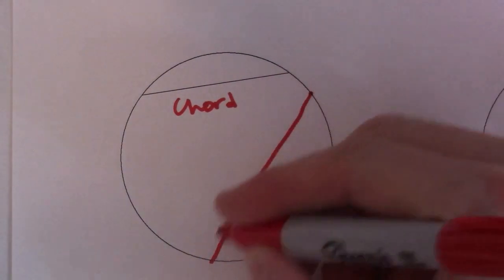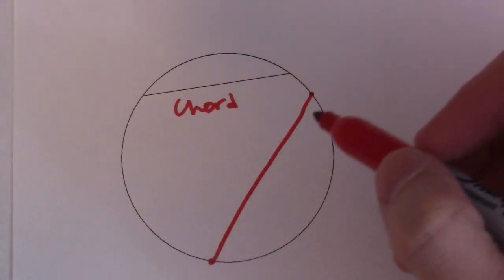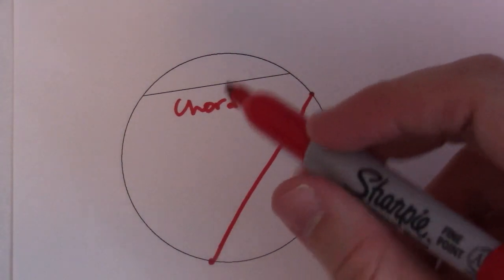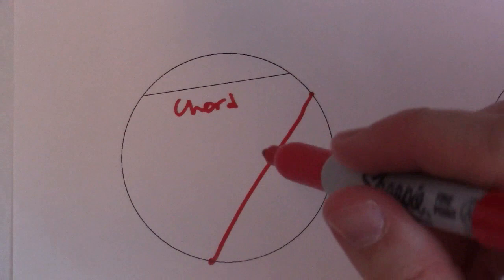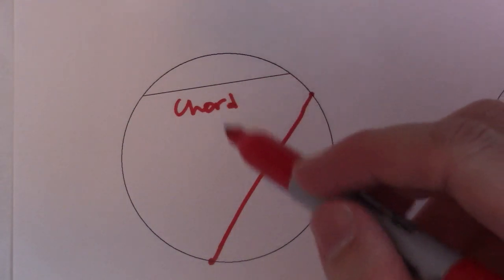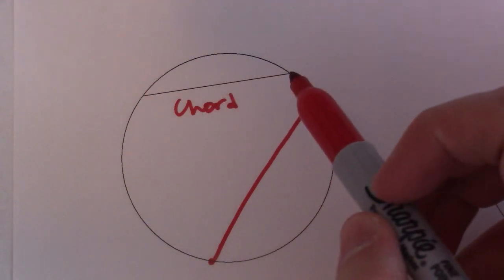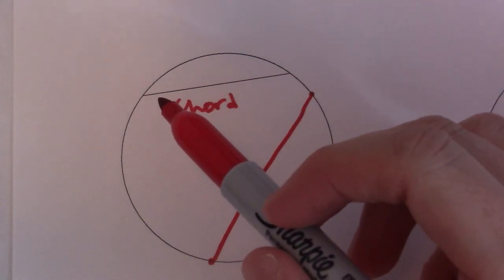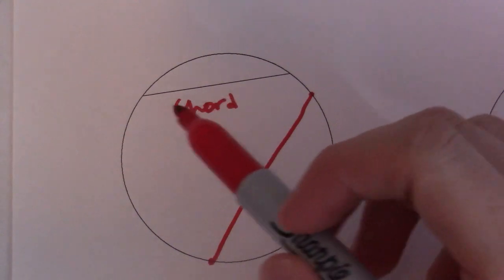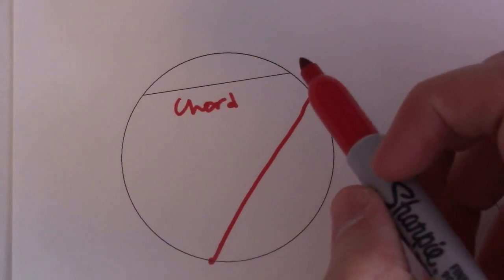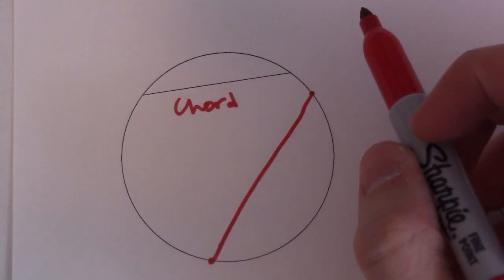It doesn't necessarily have to go through the center - this chord doesn't go through the center, this chord doesn't either. There are a lot of different chord properties, so you'll probably see them later on. If you want to check out some, I've done some videos on chord properties. They're really important to be able to recognize when you have a chord and then what properties you need to apply. A chord just basically connects any two points in the circle.